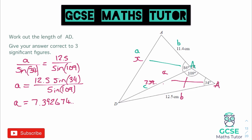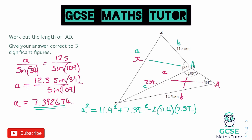Putting this into the cosine rule: a² = b² + c² − 2bc·cos(A). So that's 11.4² plus the 7.39... number squared — I'm going to use the full unrounded number — minus 2 × 11.4 × 7.39... × cos(86°). That is what I need to type into the calculator.